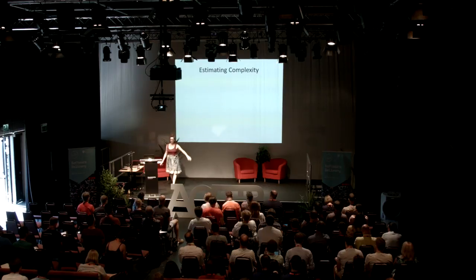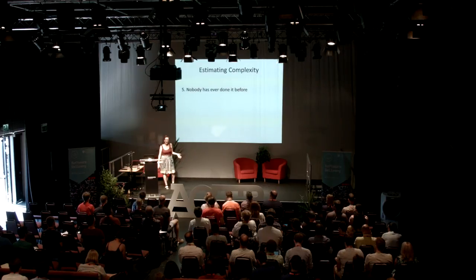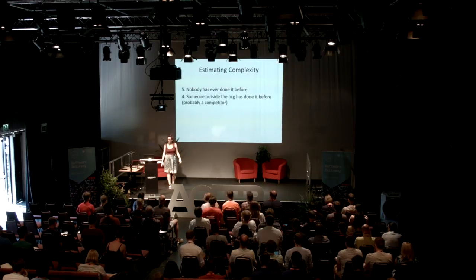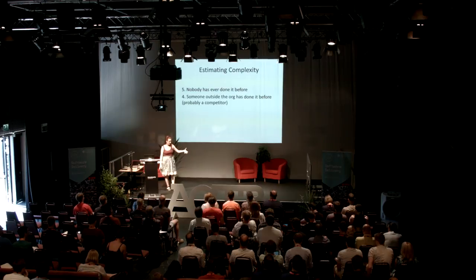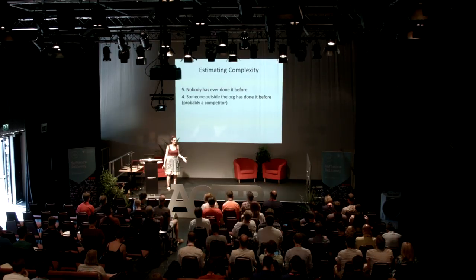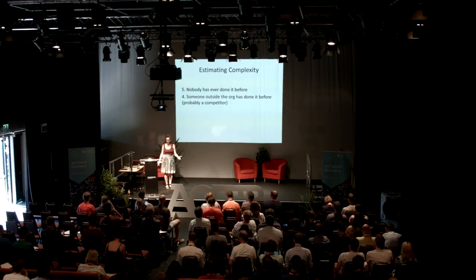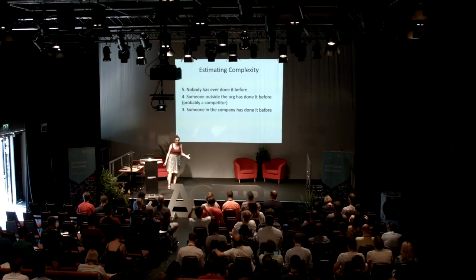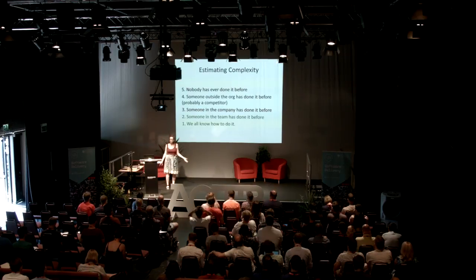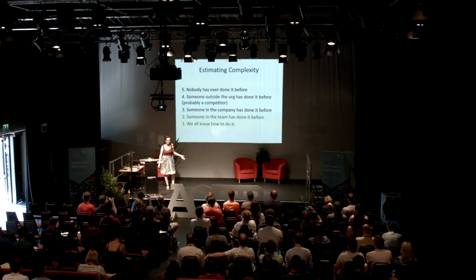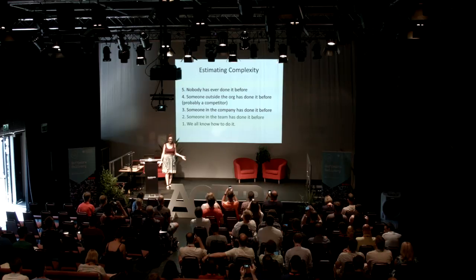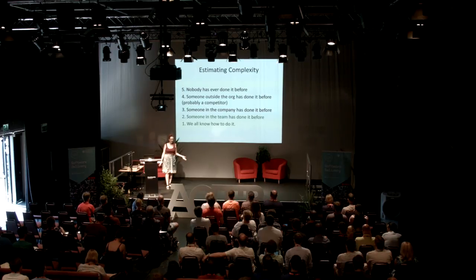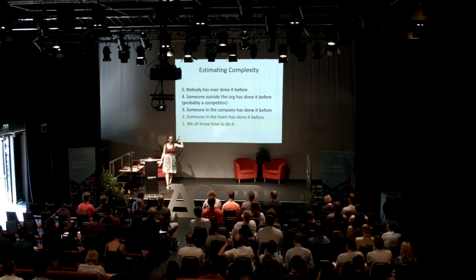I use this little scale to help estimate where we are on that Cynefin framework. I ask: who in the world has ever done this before? Five: nobody in the world's ever done this before — might not work at all. Four: somebody outside the organisation has done it but not here — we have no access to expertise, we have to treat it as complex. Three: someone in the org has done it before, or we have access to expertise — we can learn it from a book or YouTube. Two: someone in the team has done it before. One: we all know how to do it. Those fives and fours are complex — high discovery, that's where the risk is.